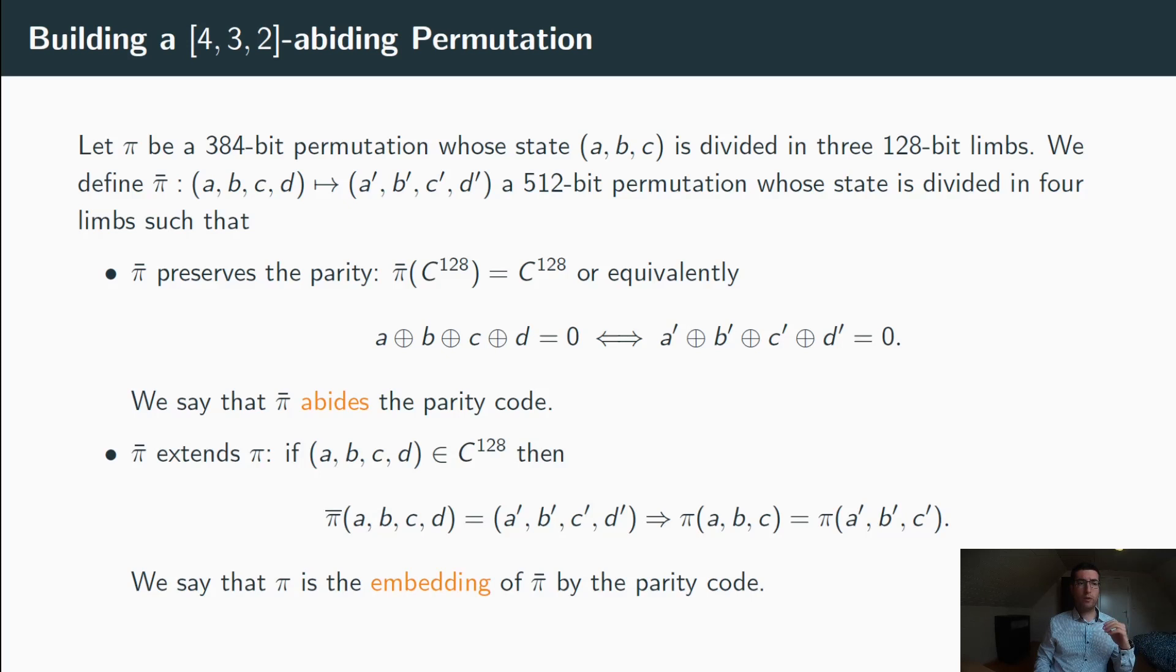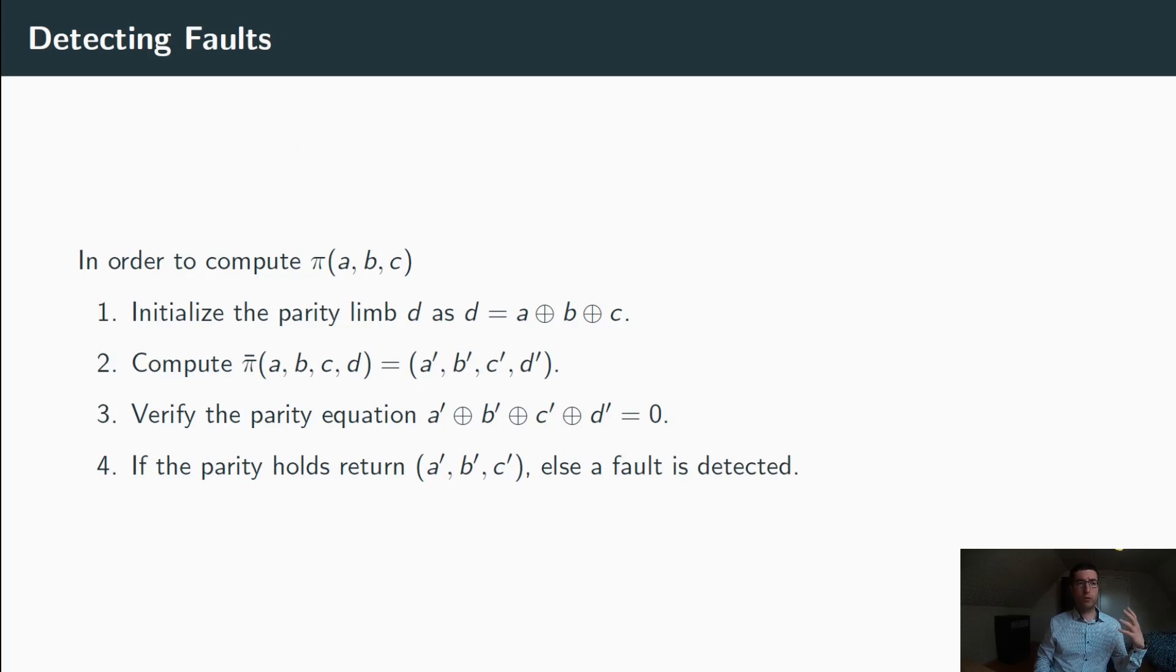The second property that pi bar needs to satisfy is that it extends pi. And by that we will mean that the restriction of the output of pi bar to the first three limbs must coincide with the output of pi. If this is the case, then we will say that pi is the embedding of pi bar by the parity code.